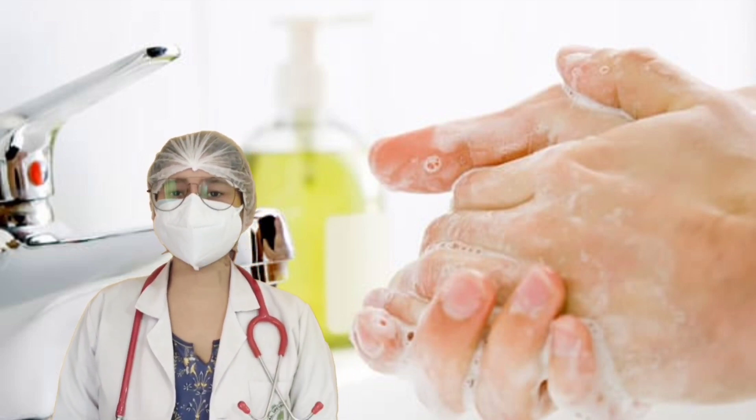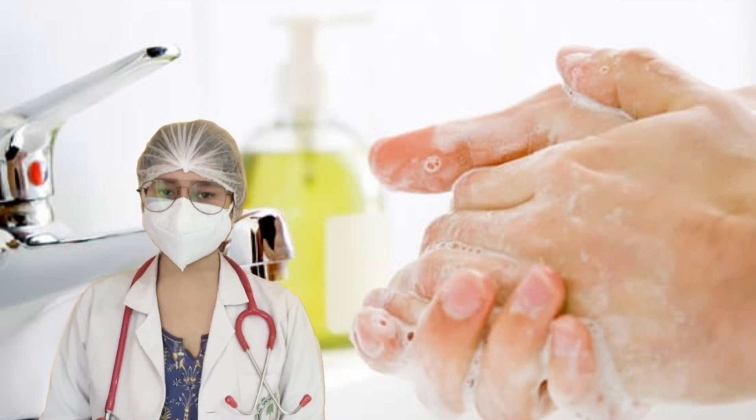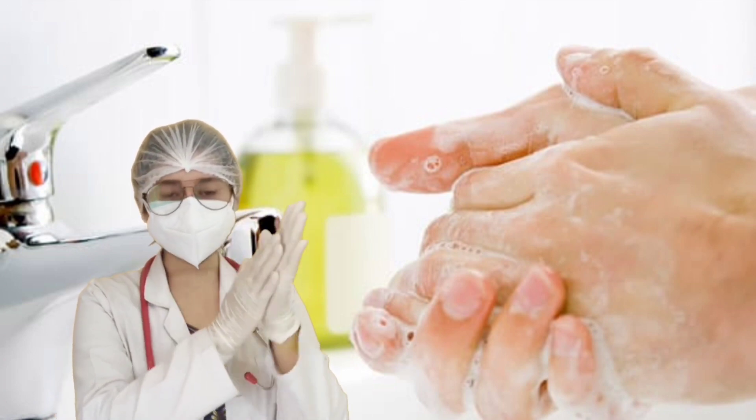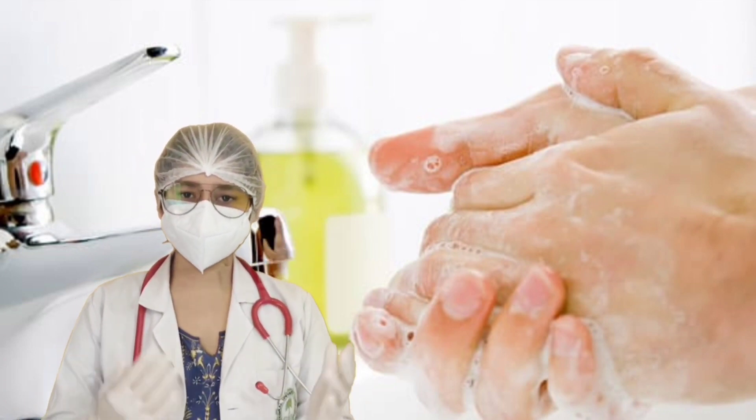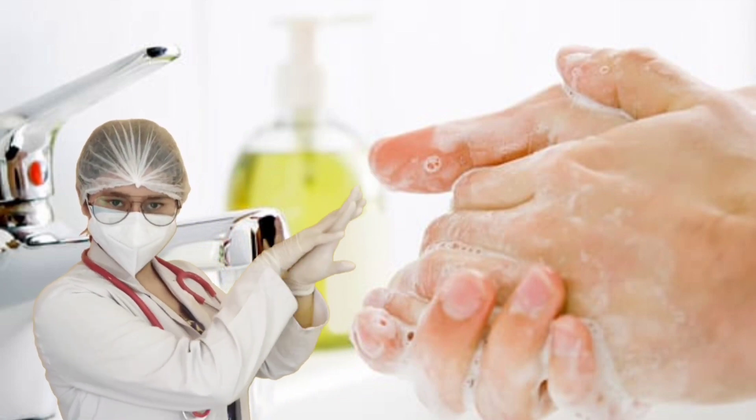First step will be S, S for Sida Haas. You have to rub your hand like this. The second step is U, U for Ulta Haas. You have to rub your hand like this.